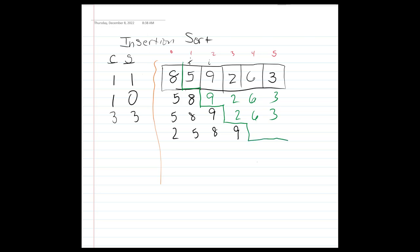We now have six and three remaining in the unsorted portion. For six: a comparison and a swap places six here, another comparison and swap places six here, then a comparison but no swap because five is less than six. So we end up with two swaps and three comparisons for the six.